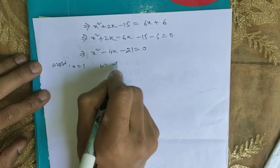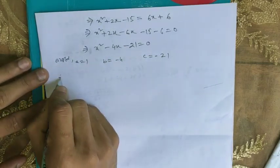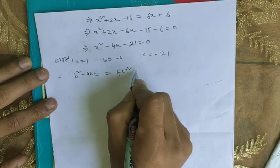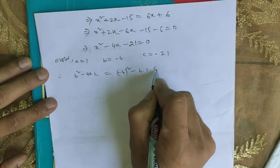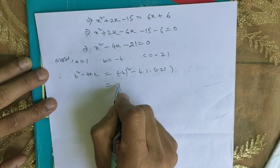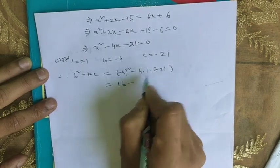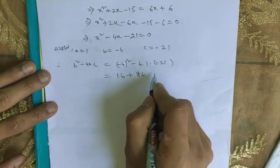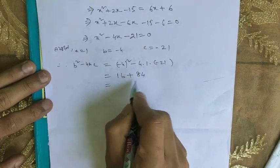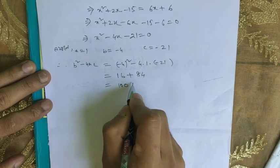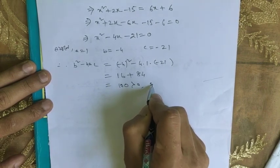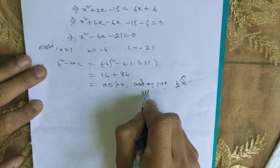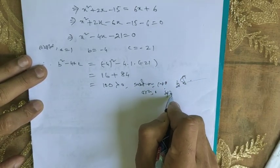With a equals 1, b equals minus 4, c equals minus 21. Discriminant: b squared minus 4ac equals minus 4 squared minus 4 into 1 into minus 21, which gives 16 plus 84 equals 100. Since 100 is greater than 0, the discriminant is positive and r minus 5 equals 0, giving root 10.